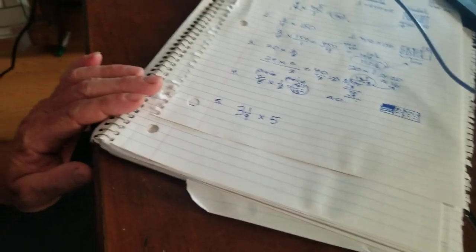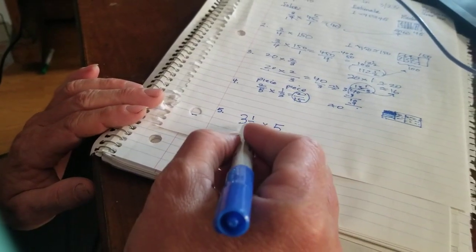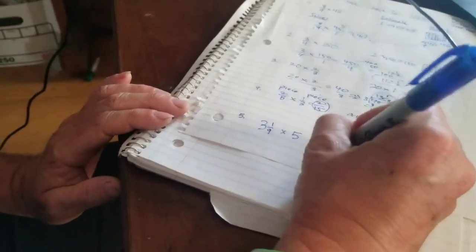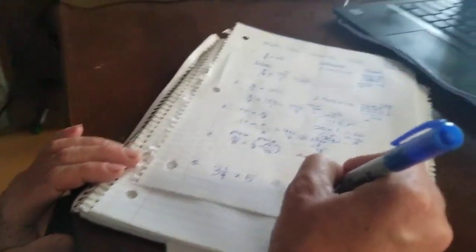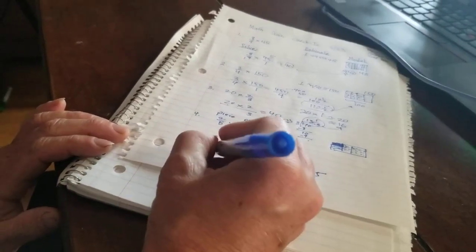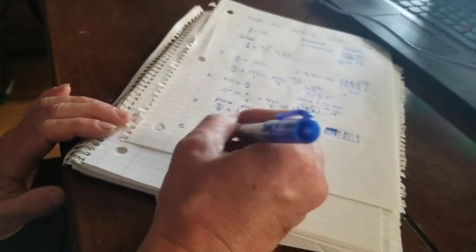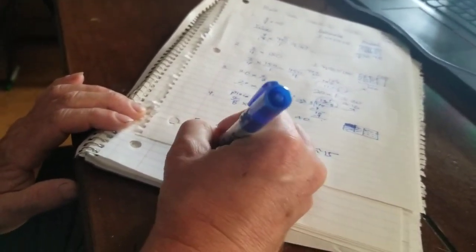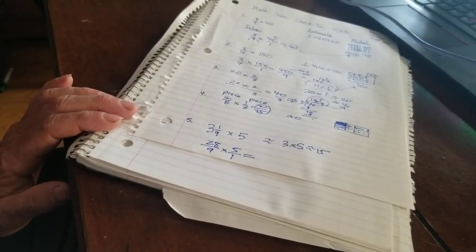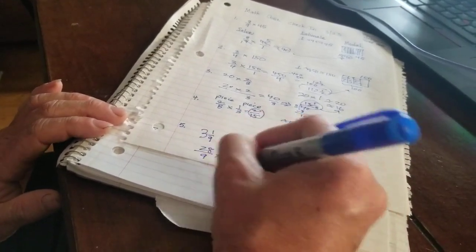Finally, one last problem: number five. 3 1/9 times 5, or 3 1/9 groups of 5. I don't know what a ninth of a group looks like, so I'll estimate about 3 times 5, which is about 15. I know I can turn this into an improper fraction and multiply across. 9 times 3 is 27, plus 1 is 28, all over 9. Times 5. I don't see any cross-canceling, but I can do 9 times 1 on the bottom is 9. Now for 28 times 5.